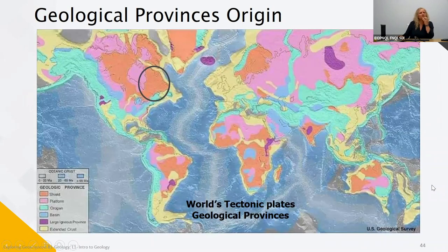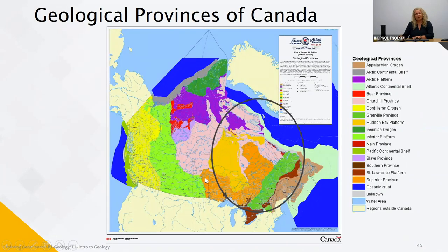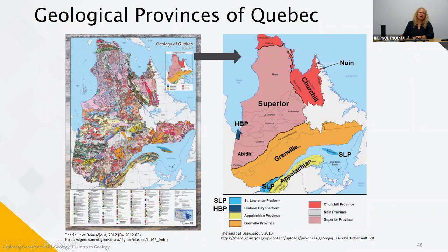Here is the world's tectonic plates with all the geological provinces and how they appear. Quebec is situated here, and within the country these geological provinces are continuous. Going through the geological provinces of Canada: in orange we see the Superior Province, which covers a large part of Quebec but continues to the west throughout Ontario and also covers part of Manitoba. The other provinces will be shown by zooming into Quebec.